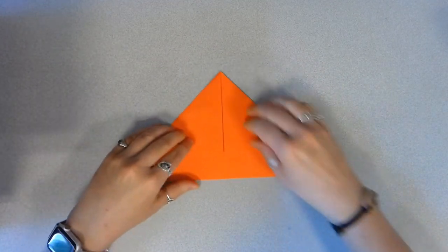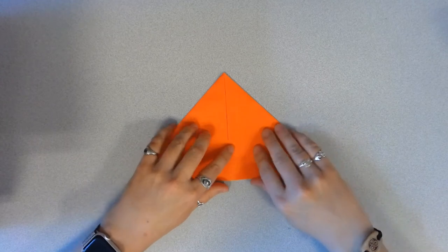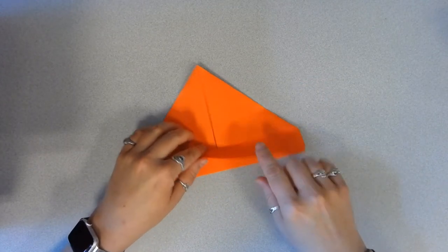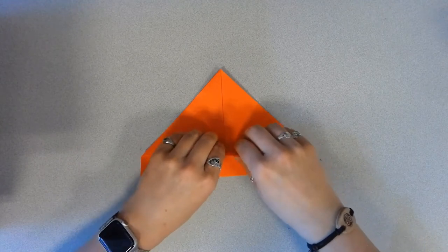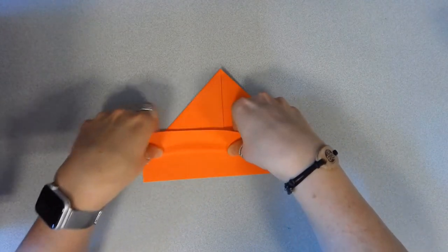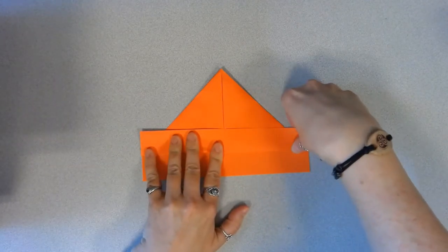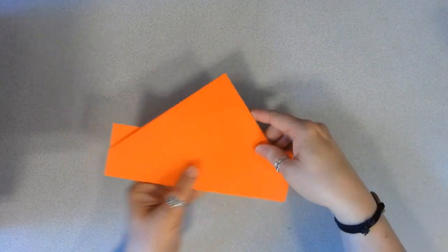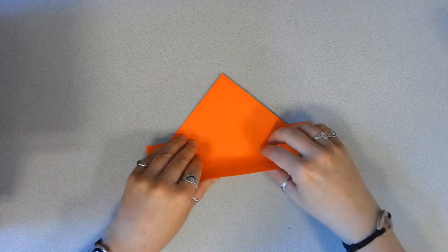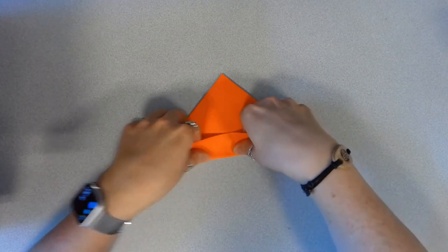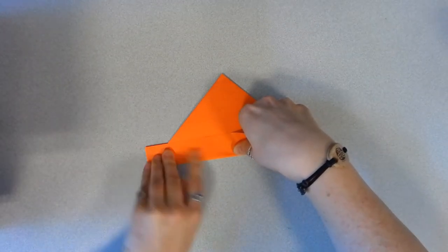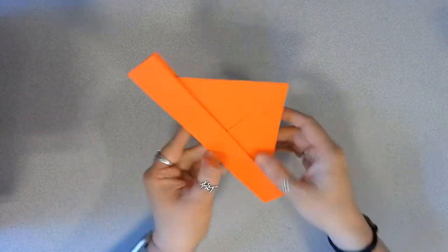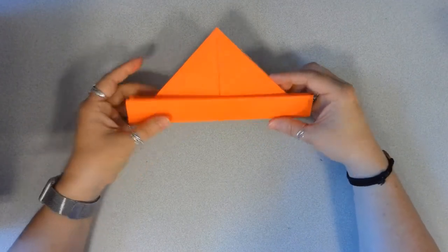All we have to do still is make the brim. We're going to fold up the bottom of the hat to make the brim. Now there are two layers here. We're just folding up the top layer first. Fold that right up like this. And then we'll turn our hat over and fold up the remaining layer like this to match. And there we have our rain hat.